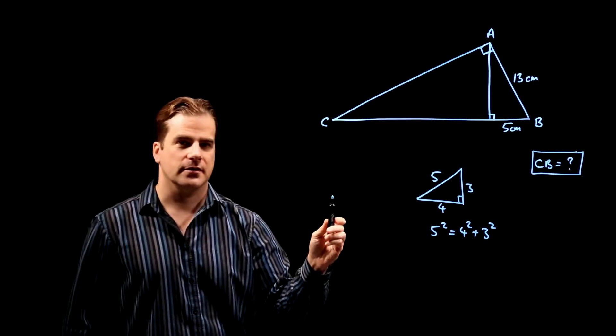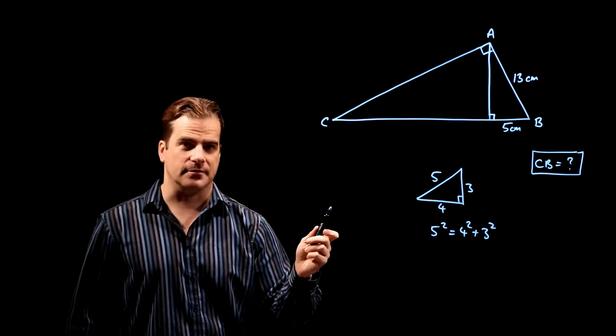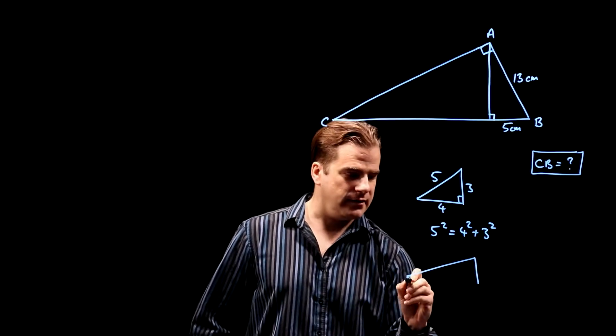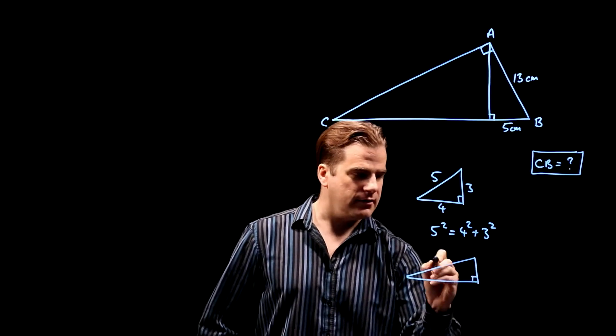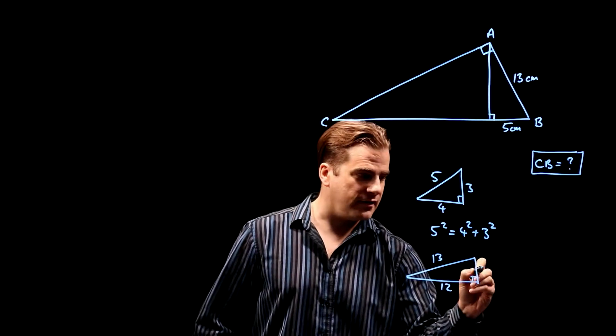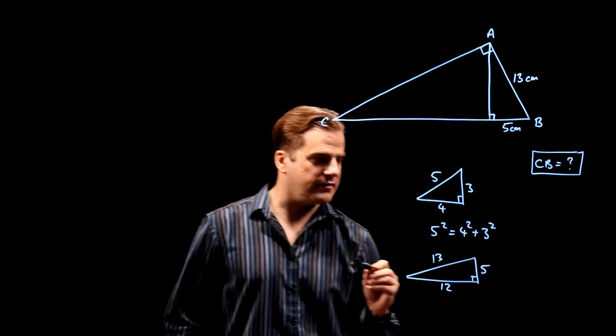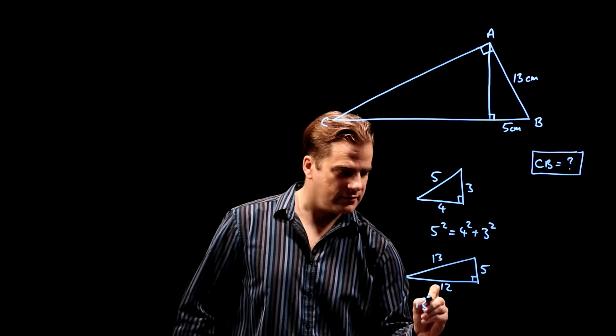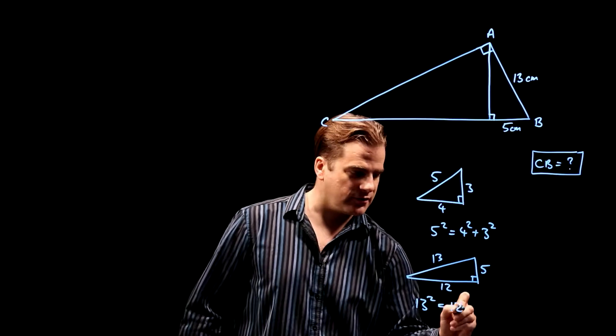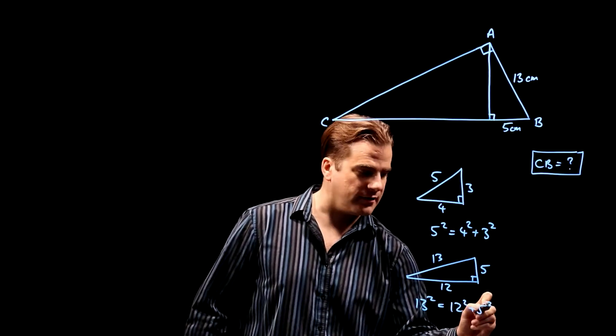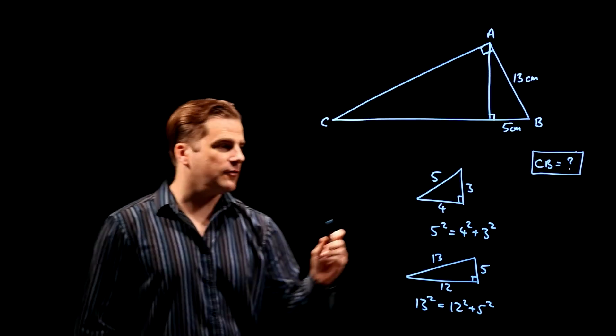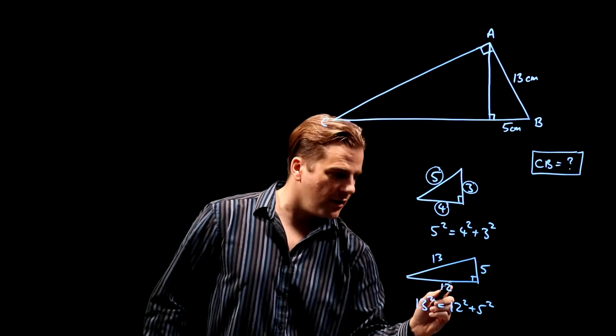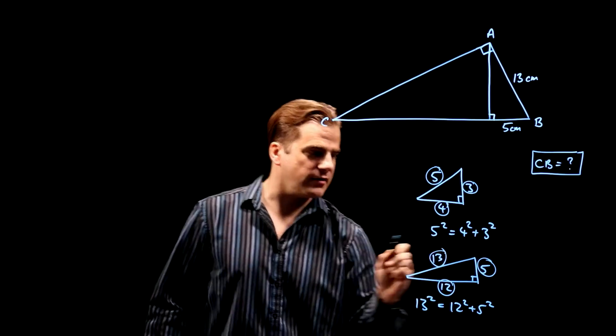But it's also a five, twelve, thirteen triangle. When the hypotenuse is 13 and this side is 12, then this one is exactly five because 13 squared is exactly equal to 12 squared plus five squared. So remember three, four, five triangles and remember five, twelve, thirteen triangles.